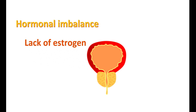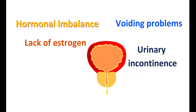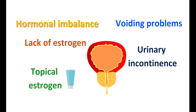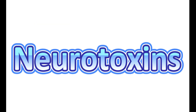Sometimes bladder problems may arise due to hormonal imbalance, particularly in women. A lack of estrogen can weaken supportive tissues around the bladder and urethra, resulting in voiding problems and urinary incontinence — especially after menopause when estrogen levels are insufficient. In such cases, topical estrogen cream can be used to control these symptoms; however, it is intended for women with estrogen deficiency only.